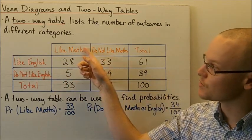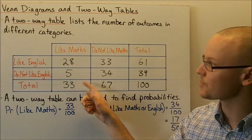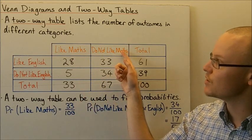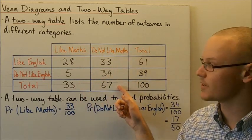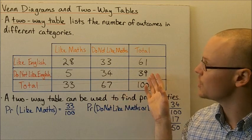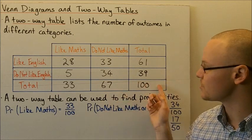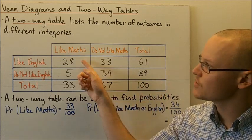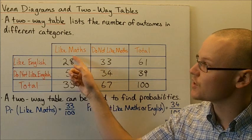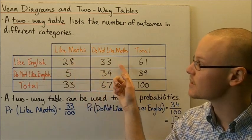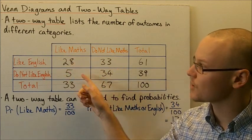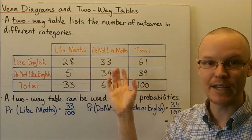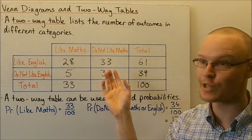The total of students who like Maths is 33, and the total of students who do not like Maths is 67. The total number of students surveyed is 100. Each of the different numbers in the table that aren't the totals show the students who are part of each of the four categories.